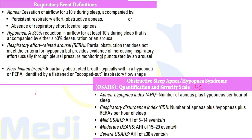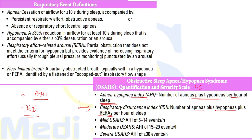For quantification and severity: the apnea-hypopnea index includes apneas plus hypopneas per hour of sleep. The respiratory disturbance index also includes RERAs, so RDI includes apneas, hypopneas, and respiratory effort-related arousals per hour of sleep. Severity of OSA is: mild if AHI is 5–14, moderate if AHI is 15–29, and severe if AHI is more than or equal to 30 events per hour of sleep.